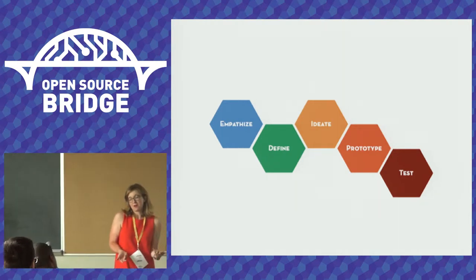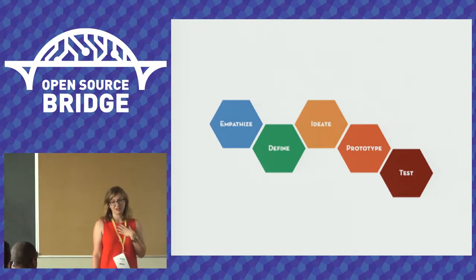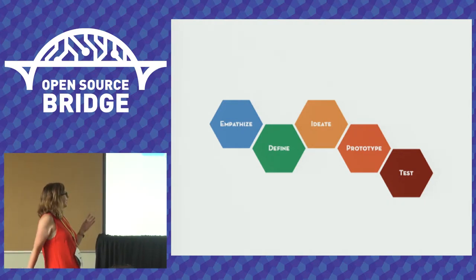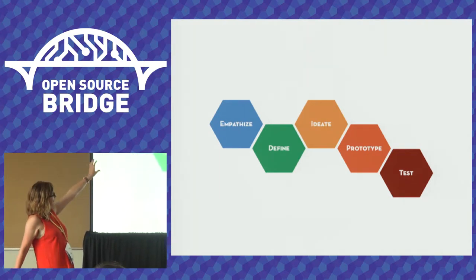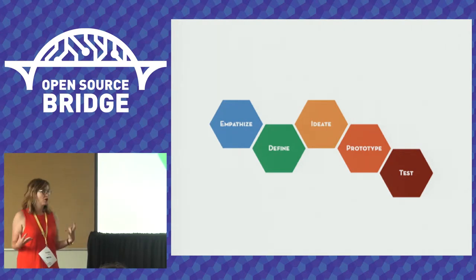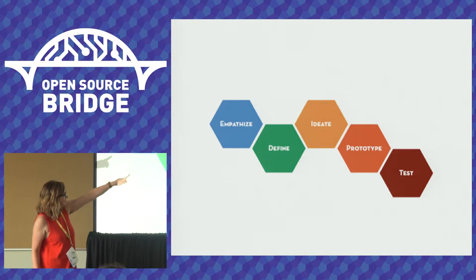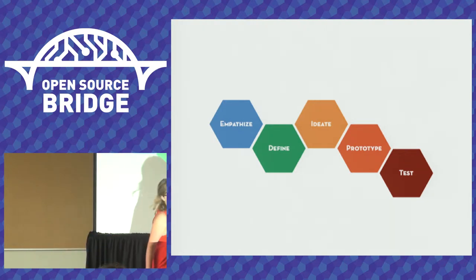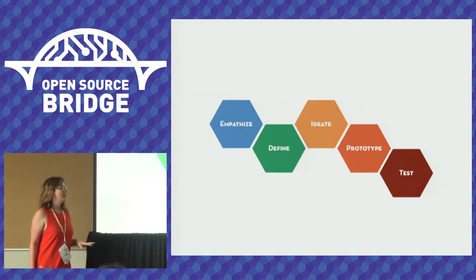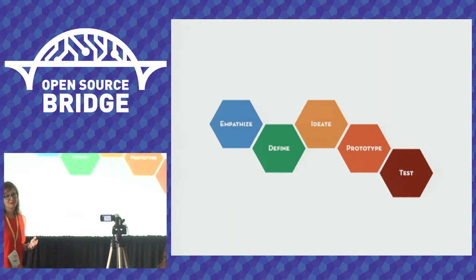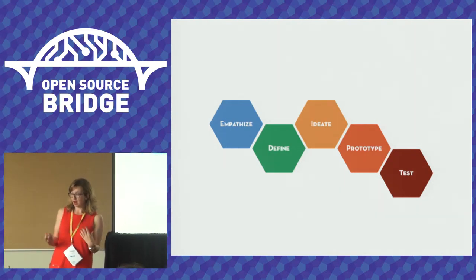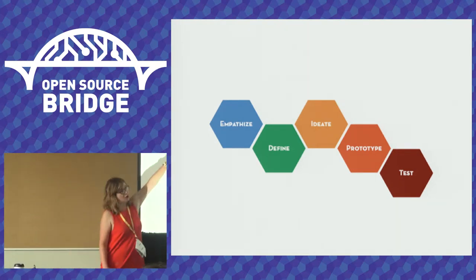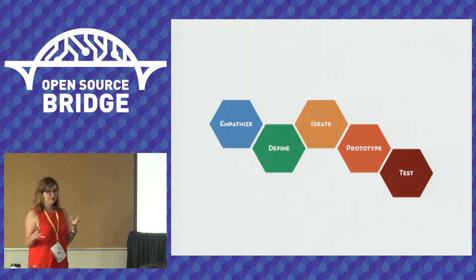Every UX designer will talk about their process. This process was iterated by the Stanford D School, and I use theirs because I don't want to reinvent the wheel. They start with empathy, then defining problems, then ideating on how to solve those problems. But most creative folks — designers and developers included — tend to start right at ideation and think about empathy and problem definition afterwards. As we will assert in this workshop, when you can start from the empathy quadrant, a lot of things work a lot better.